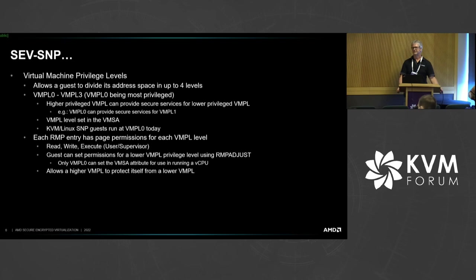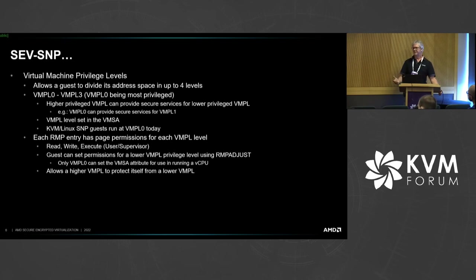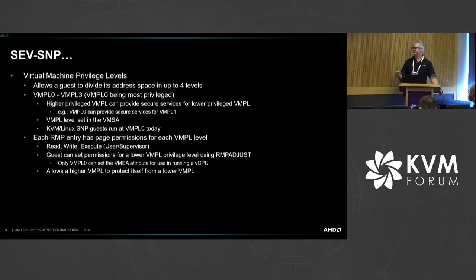This allows a higher privileged VMPL to provide secure services to lower privileged VMPLs. The VMPL level is represented in the VMSA of the vCPU that is currently running. Today in the KVM Linux SNP patches that we've been sending upstream, everything is VMPL 0. The RMP entry has additional information related to the VMPL levels — this is where that information can differentiate the privileges associated with VMPL 0, VMPL 1, and VMPL 2. We have read, write, and execute permissions. You can only set the permissions for a VMPL lower than you are currently running, so you can't change your current access permissions or those of a higher VMPL level.